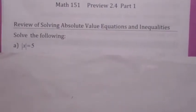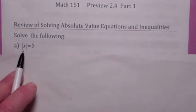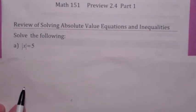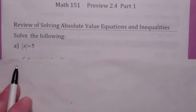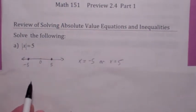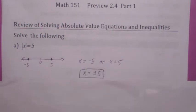Start off with this problem. Remember the absolute value? One way to think of it is that the absolute value of a number x is its distance to zero. So this is just saying the distance that x is from zero is five units. That means x could be over here or over here. So the solution to this absolute value equation is x equal plus or minus five.